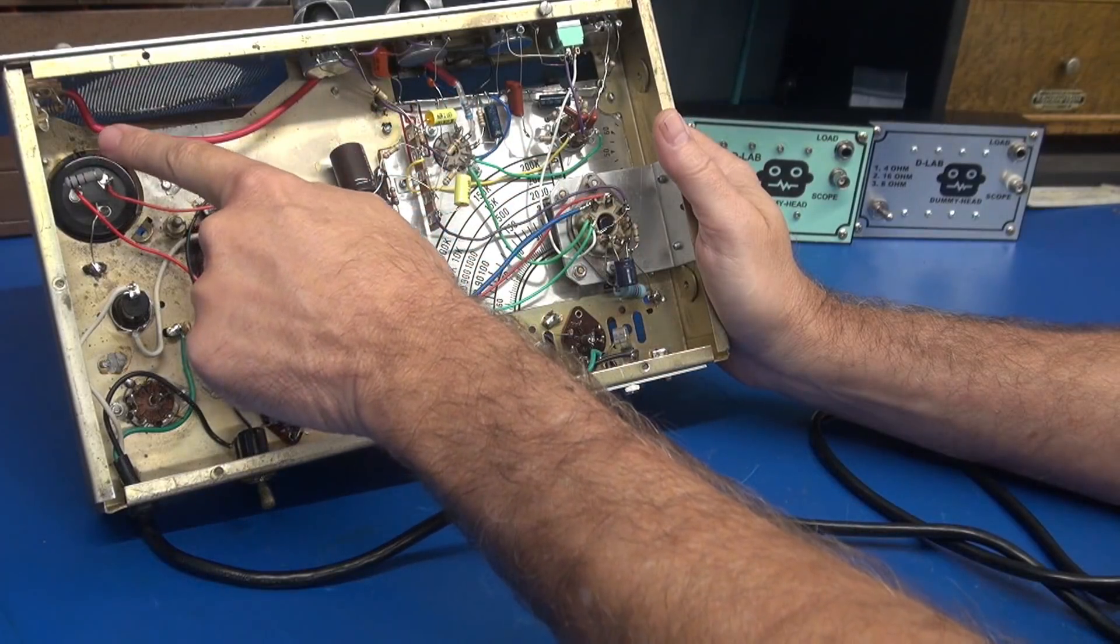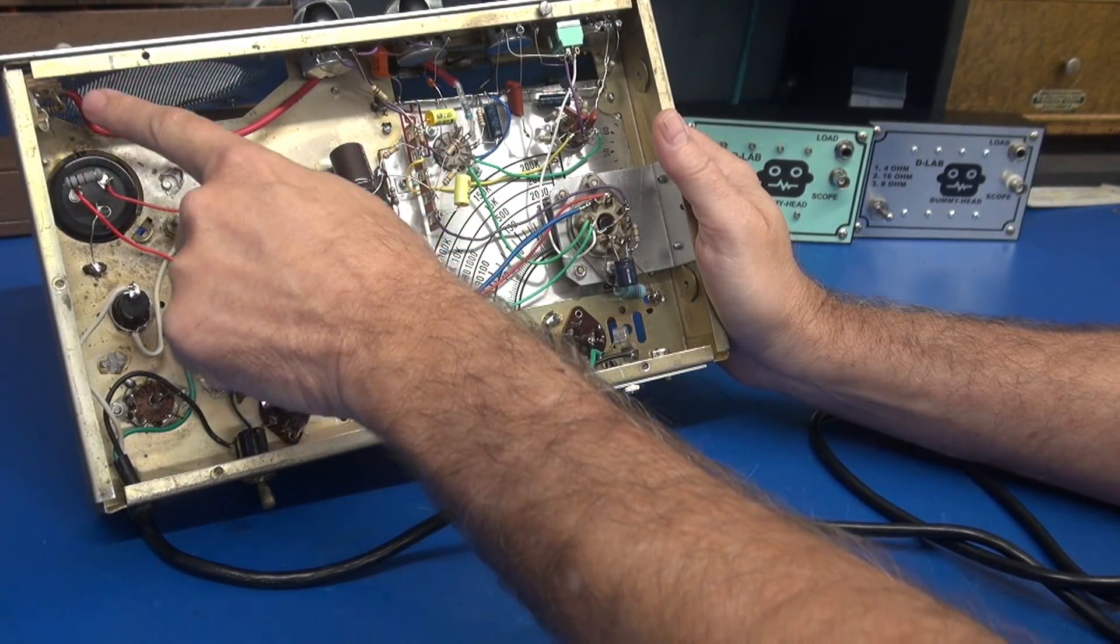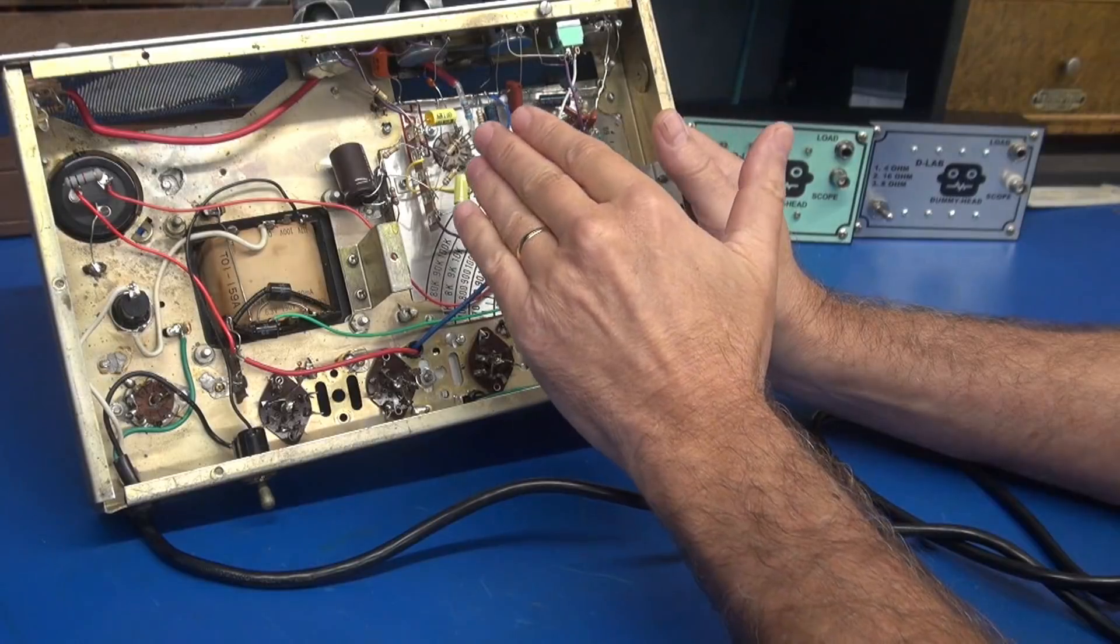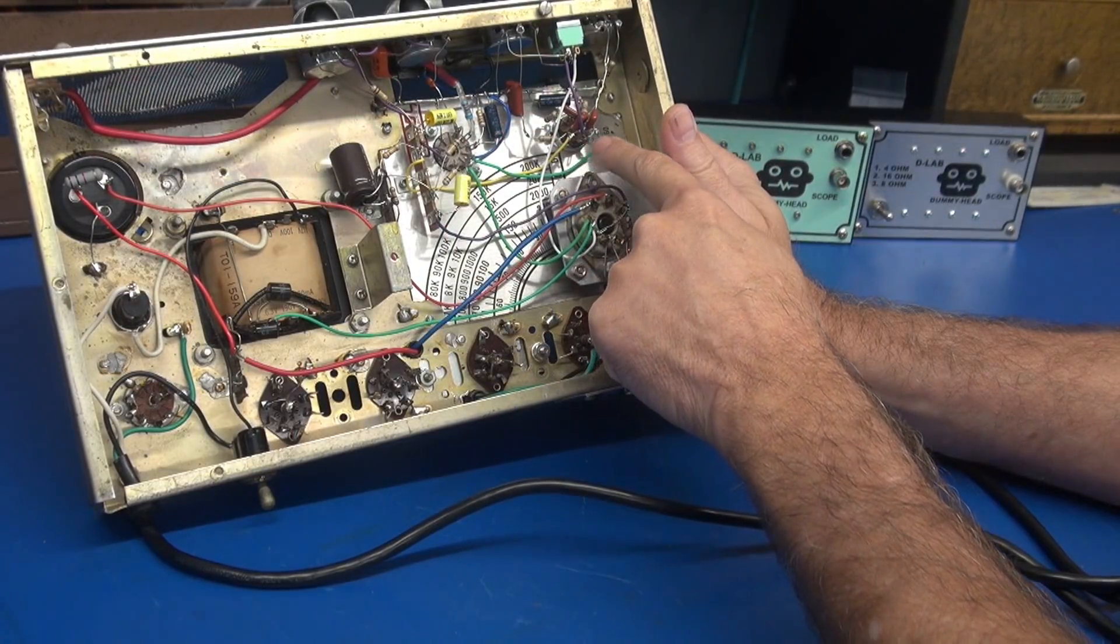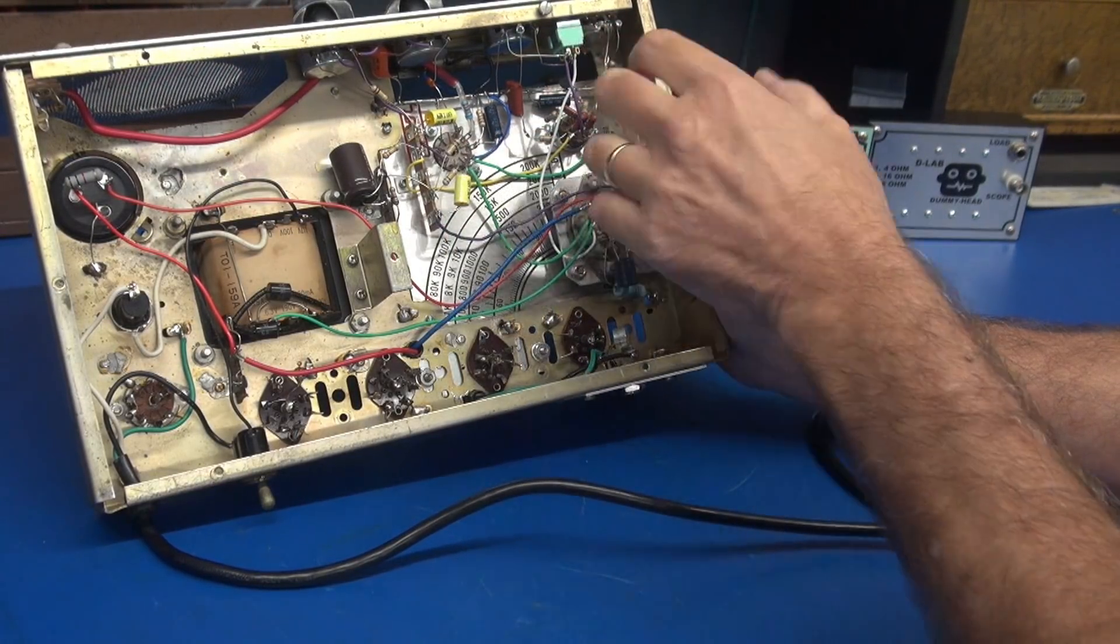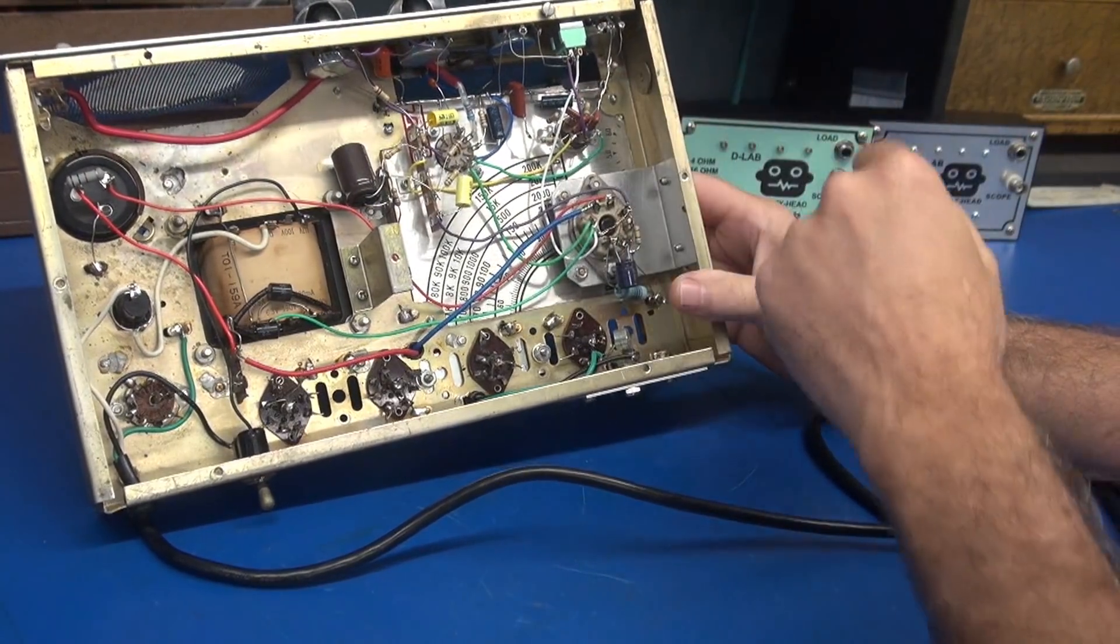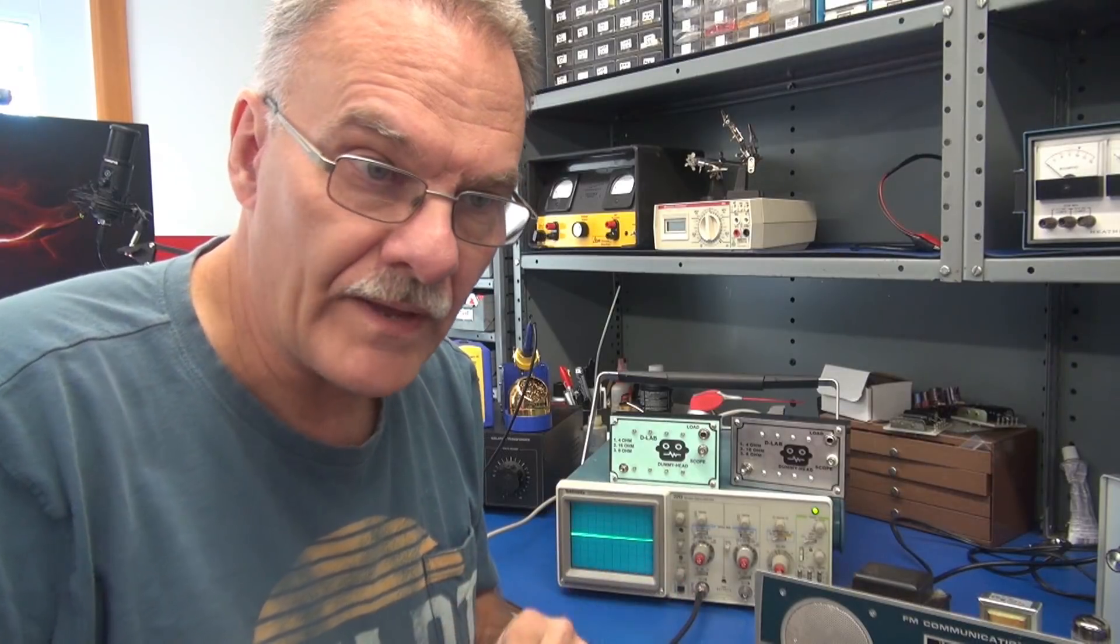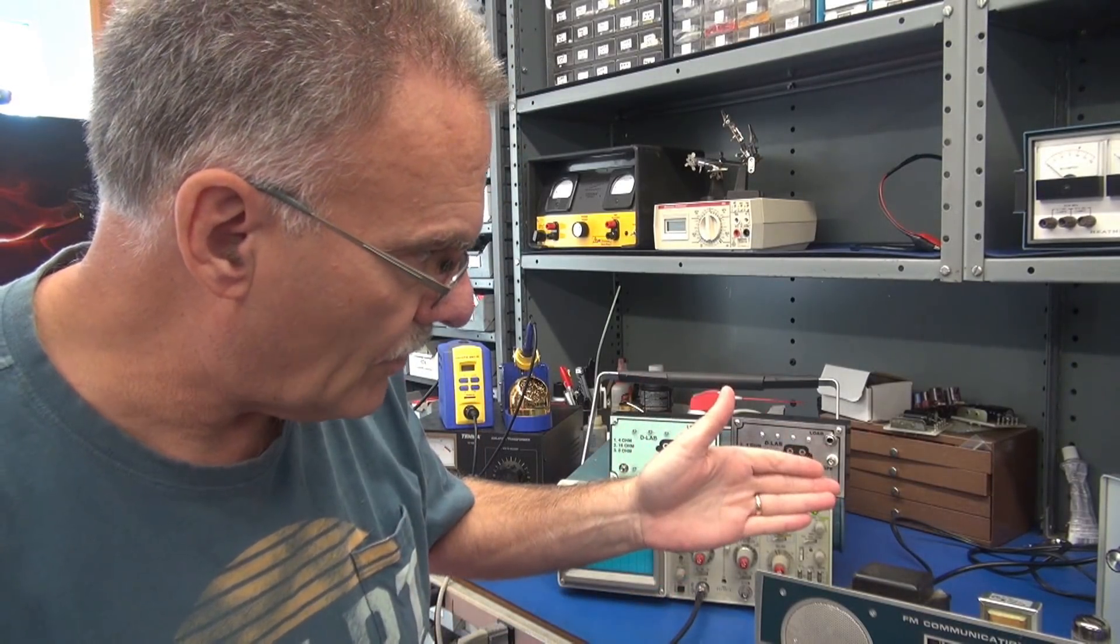Here's my 12AX7, and if you follow that red coax, that's going over to the input jack. Had to use coax because obviously we've got some length here, I did not want to pick up noise. There is my tremolo circuit, the little 6AV6, and there's the bottom of that fancy push button selector.